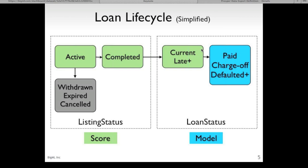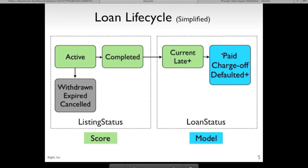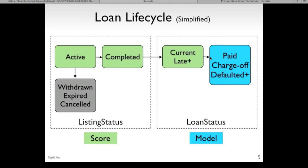So what can we do with this data? We could actually do quite a few things. One thing I've done before is using loans that are inactive and building a model that predicts what the interest rate will be. But another thing we could do is take all the listings that became loans and attained some final disposition, build a model that predicts what the final disposition would be based on the listing data, and then take all the current listings and score them against that model to predict their final disposition — and that's what we're going to try to do today.